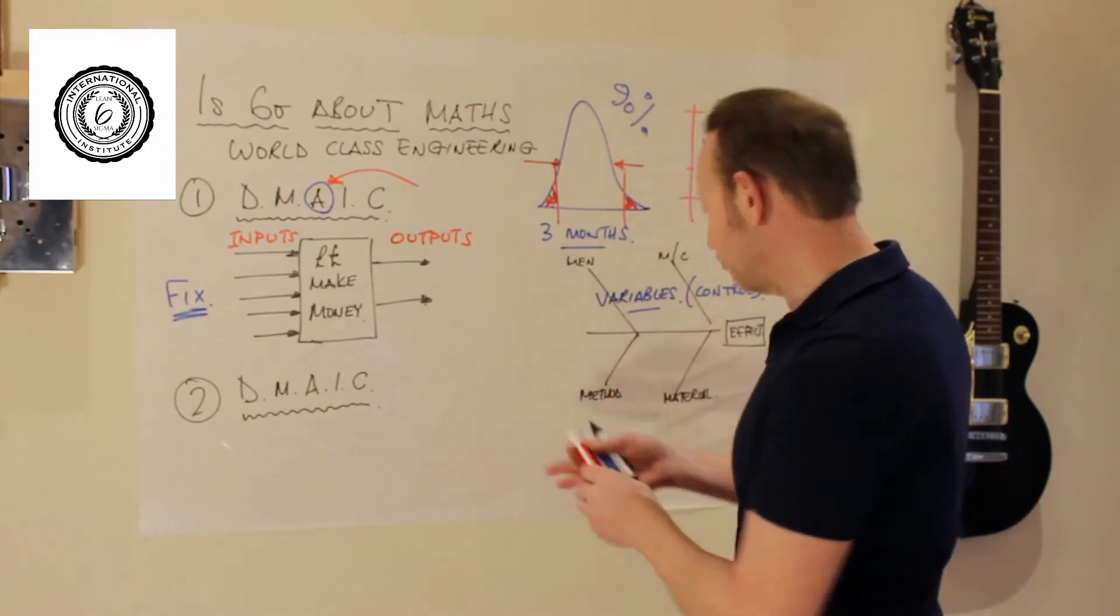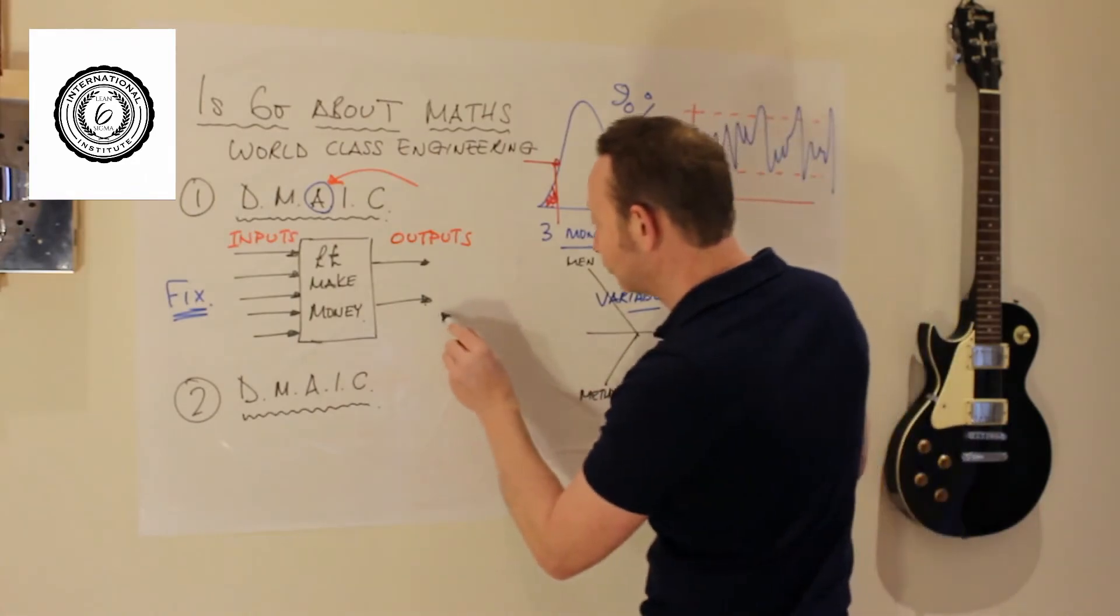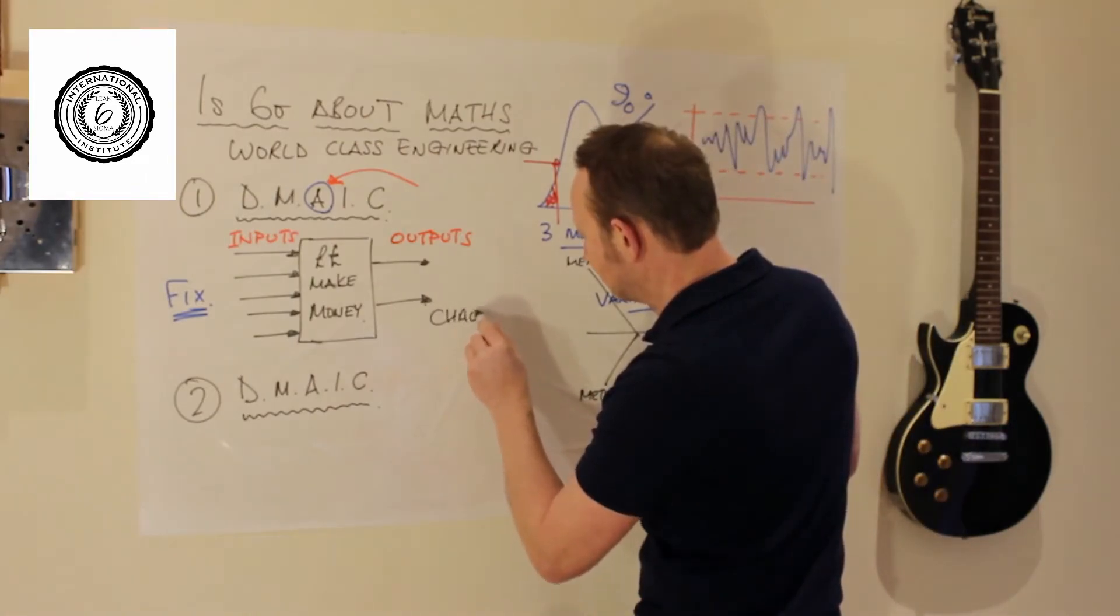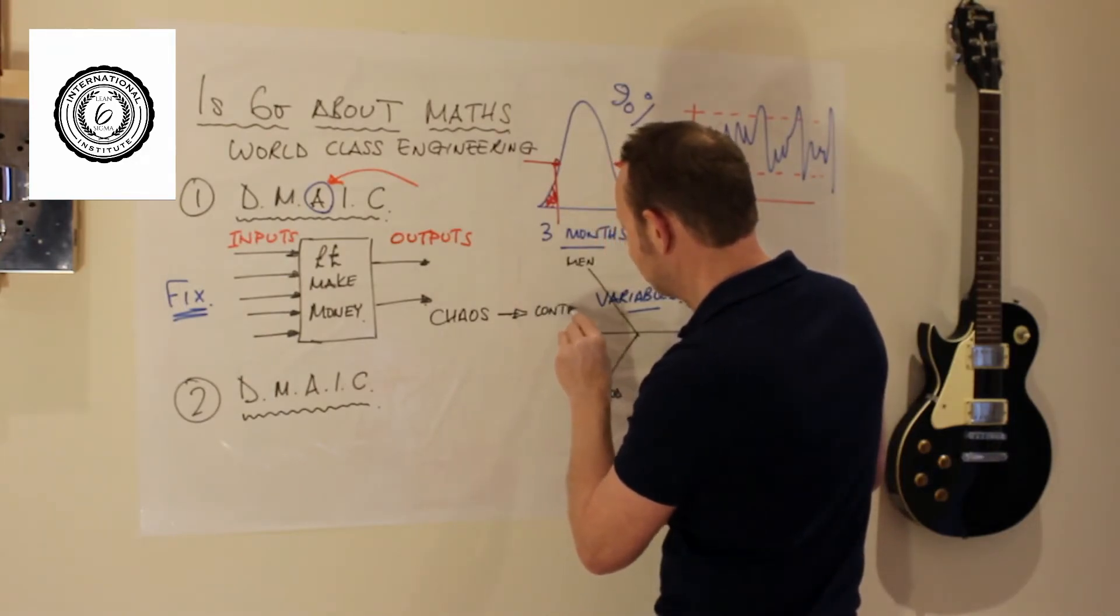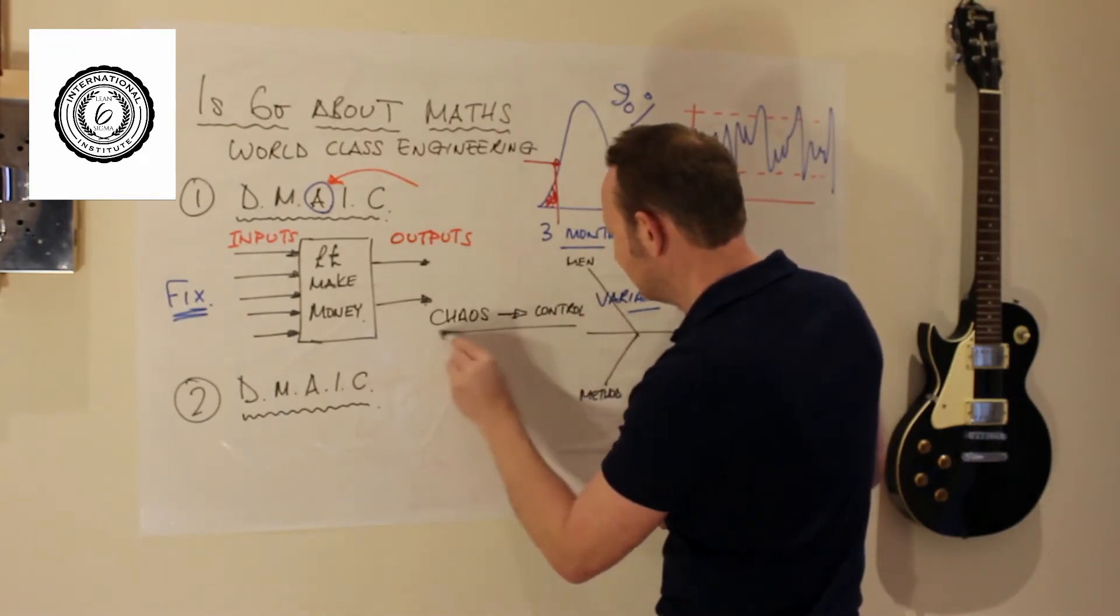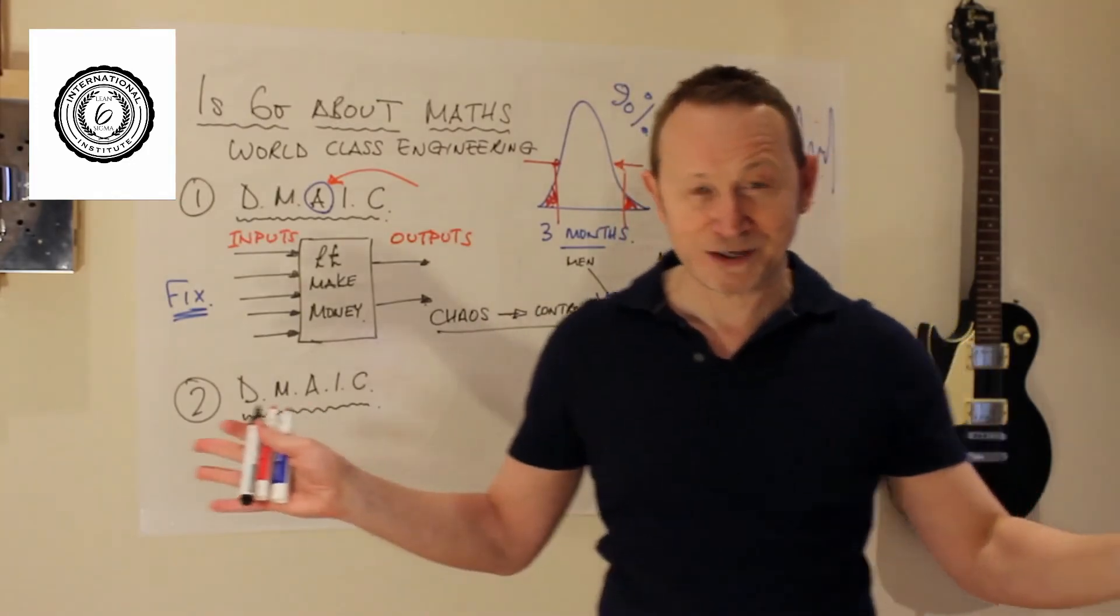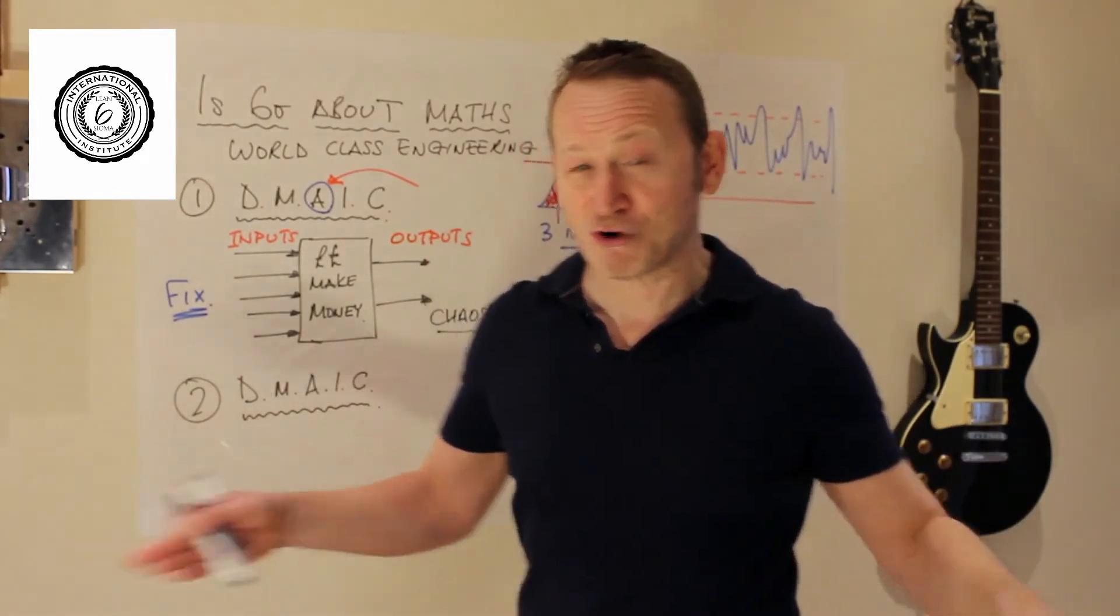This is known as going from chaos to control. It takes three months and needs no mathematics at all. It needs process controls. Job done.